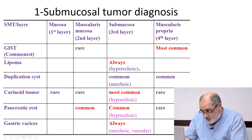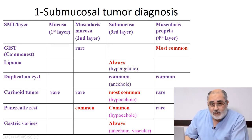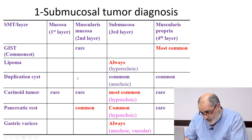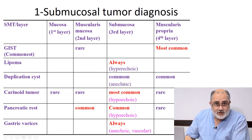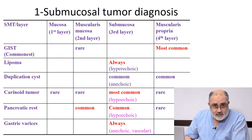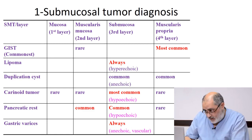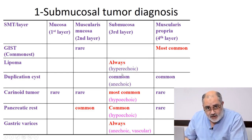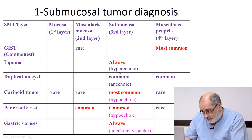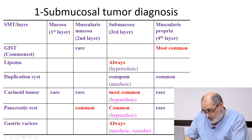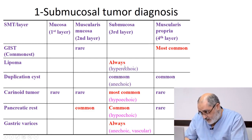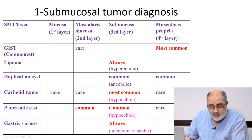Another submucosal tumor is lipoma. It is always located in the submucosa, the third layer, and is usually hyperechoic. So a hyperechoic lesion in the submucosa — third layer — we should think of lipoma. Duplication cyst is a congenital anomaly — a segregated part of the wall of the gut inside the wall of the esophagus or stomach. They commonly originate in the third or fourth layer, and they are anechoic — jet black — and of course avascular with no vascular activity at all.